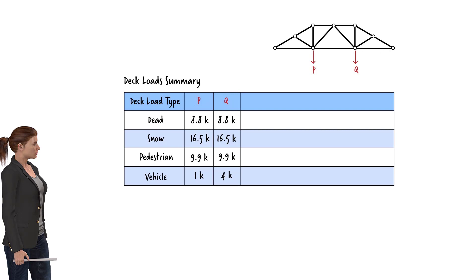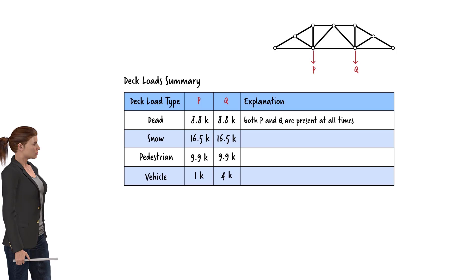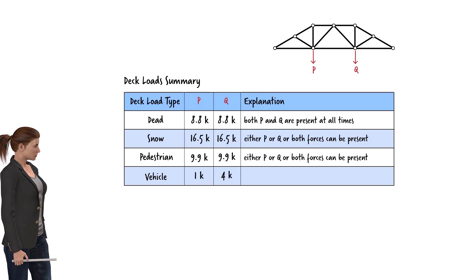Here is a summary of the deck loads acting at the truss joints. For truss analysis, we need to keep the following observations in mind. For the dead load, p and q are present at all times. For the snow load, since snow can be partially removed from the bridge deck, only one of the loads could be present. The same is true for the pedestrian load — the truss could be subjected to either p or q, but not both. Although both p and q must be present for the vehicular load, since the direction of the truck can be reversed, the magnitudes of p and q are interchangeable.